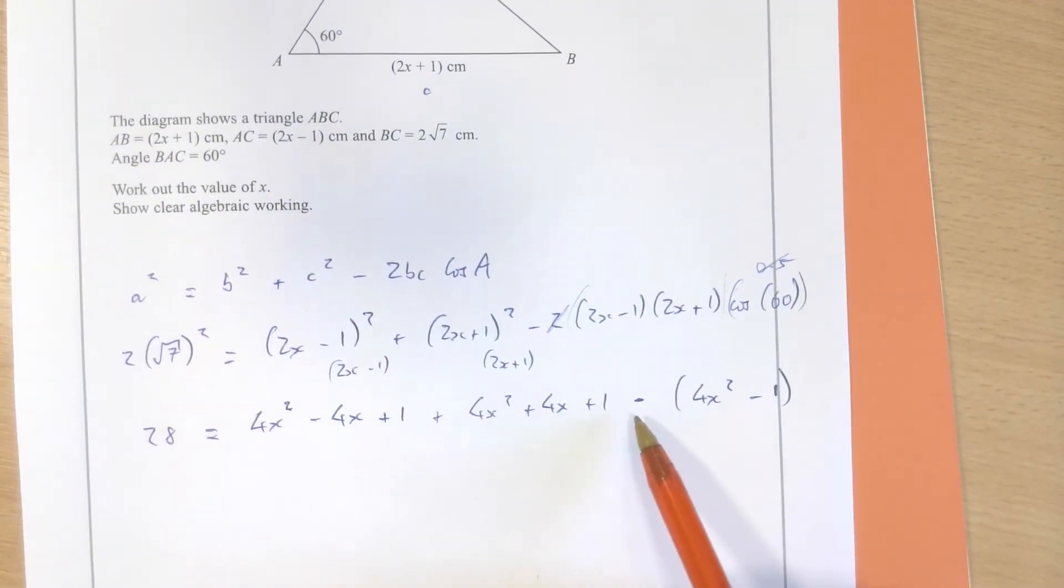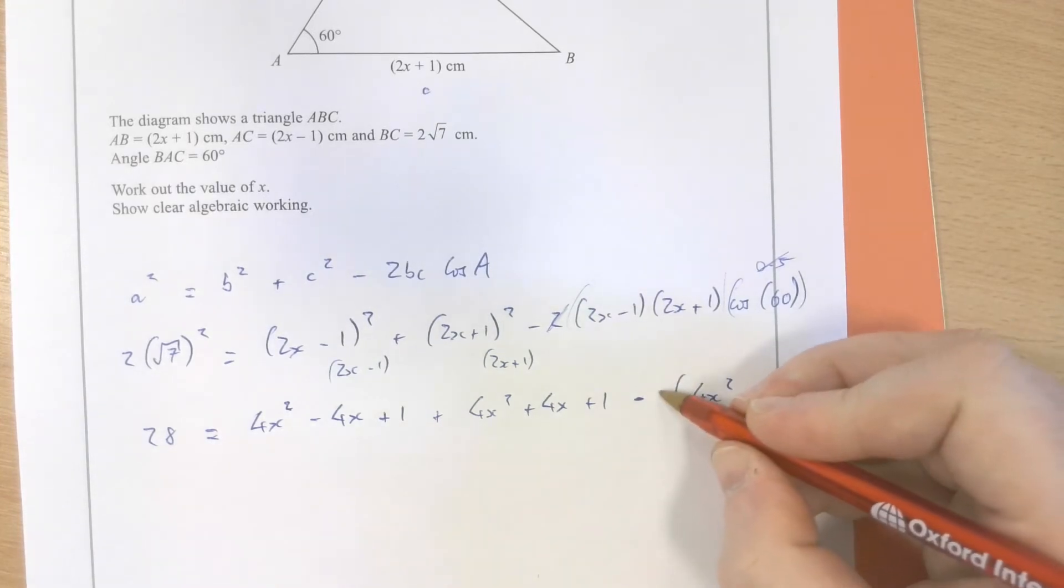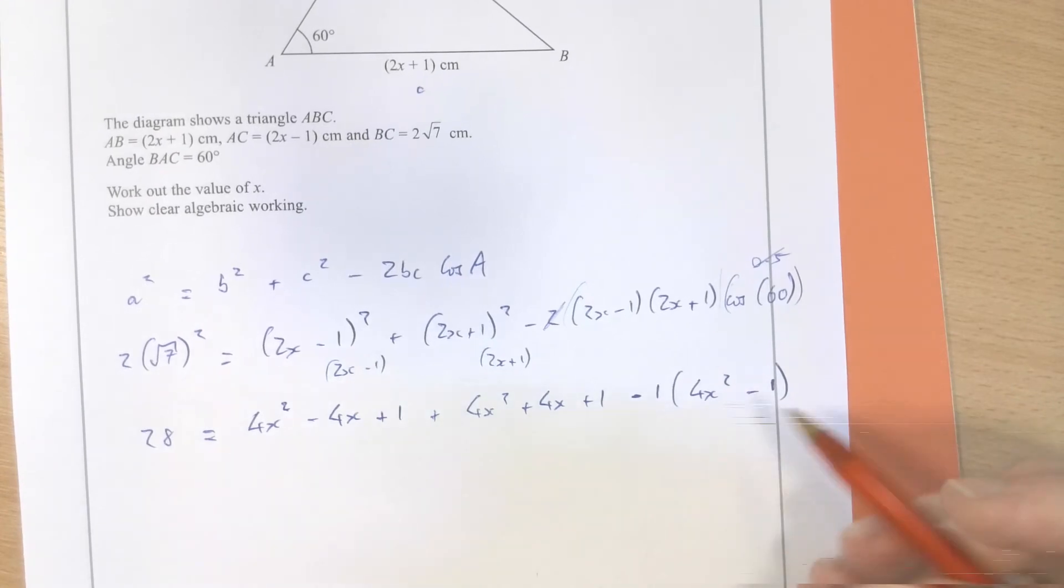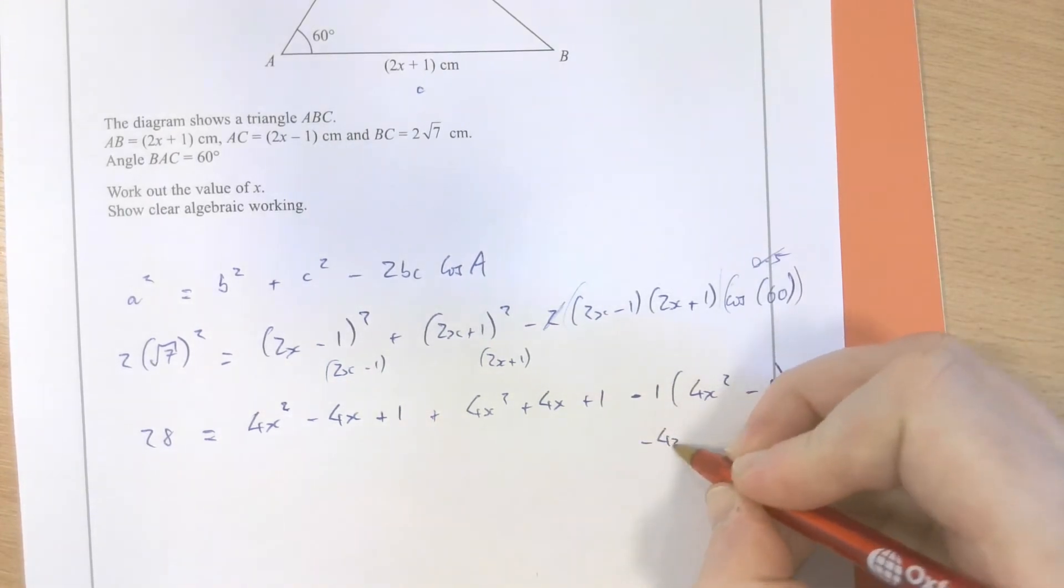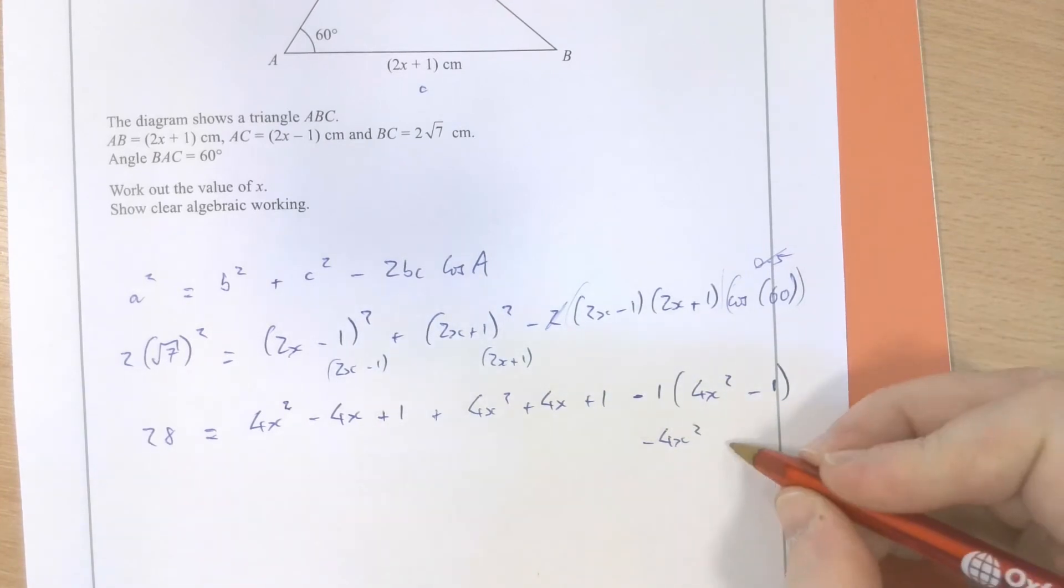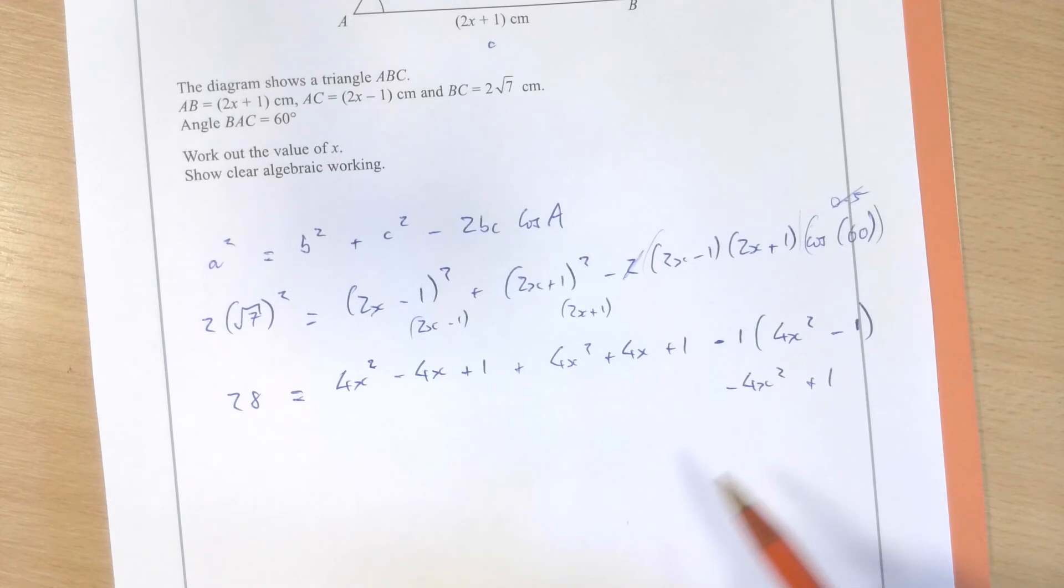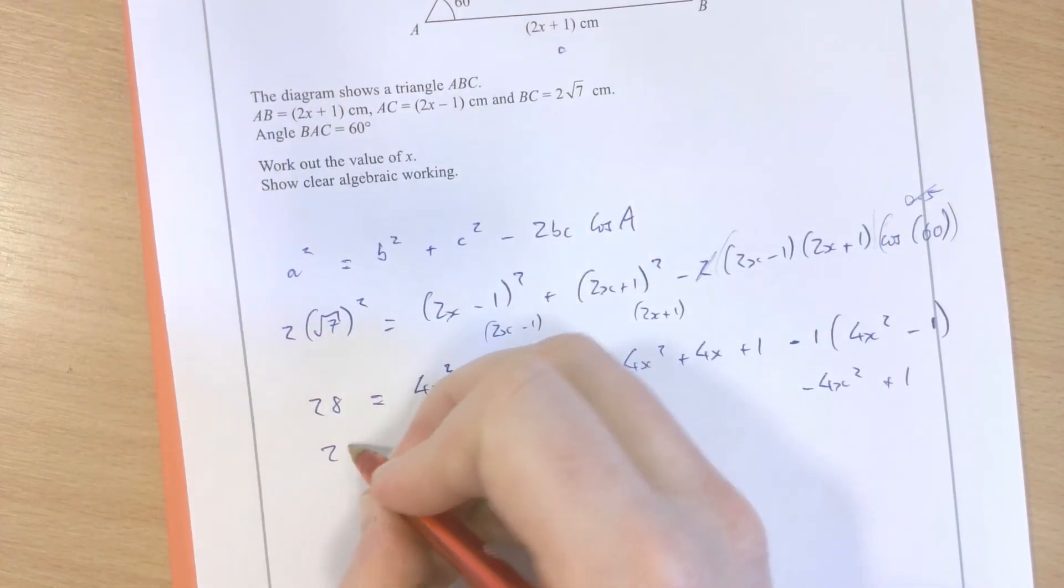Now, I need to keep that minus there because, effectively, I can think of this as a minus 1 in front of this single bracket. Minus 1 times 4x squared makes minus 4x squared, and then minus 1 times minus 1 makes plus 1. That's effectively part of the next line of work that I'm going to fill in here.